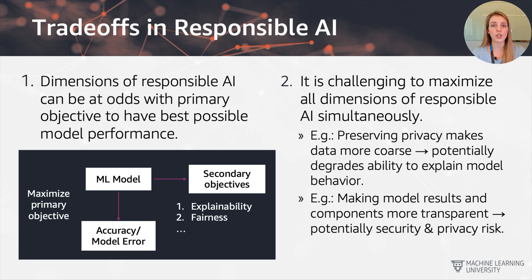It is challenging to maximize all dimensions of responsible AI simultaneously. For example, if you preserve privacy by making the data more coarse — by creating buckets of data points — that will make it harder to explain a particular data point because the data has been made more coarse. You can find examples of all these different trade-offs, and we'll look at some of them in more detail later on.